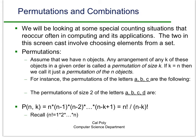For permutations, we assume that we have n objects, and we want to look at all possible arrangements of k of these objects, and we call one of those arrangements a permutation of size k. And if k is just equal to n, then we ignore the size part, and we just talk about a permutation of n objects.